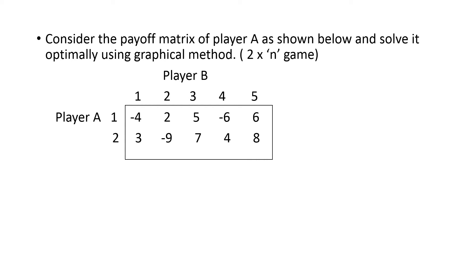Here is a question: consider the payoff matrix of player A as shown below and solve it optimally using graphical method. This is a 2×n game. For player A, there are 2 strategies, so the rows are fixed at 2. The number of columns will be changing — here the number of columns is 5, meaning player B has 5 strategies and n equals 5. For player A, the strategies are always 2. This is what a 2×n game means: 2 rows and n columns.